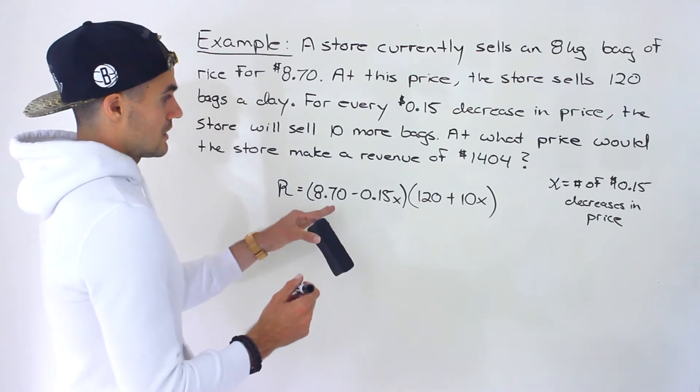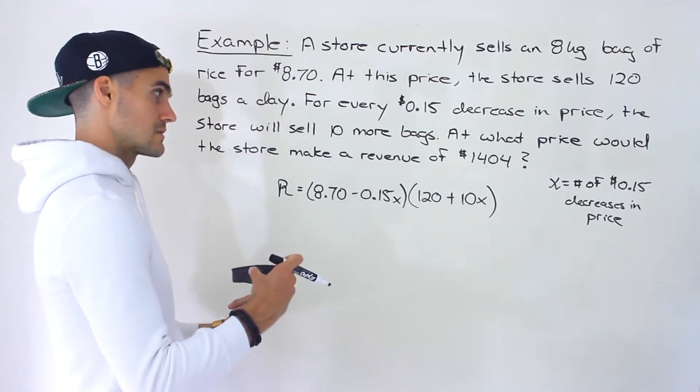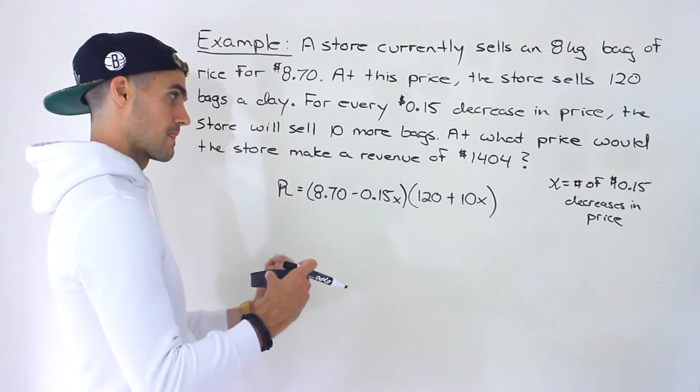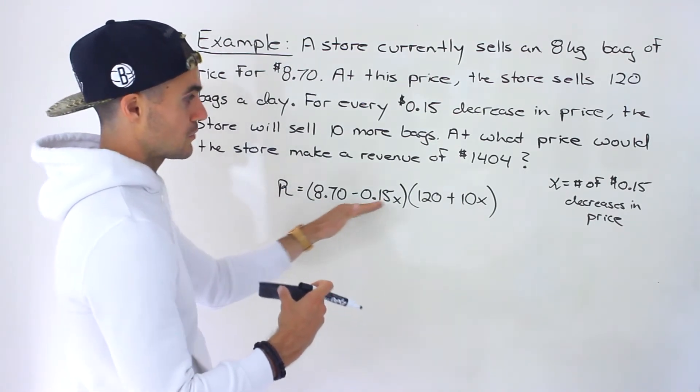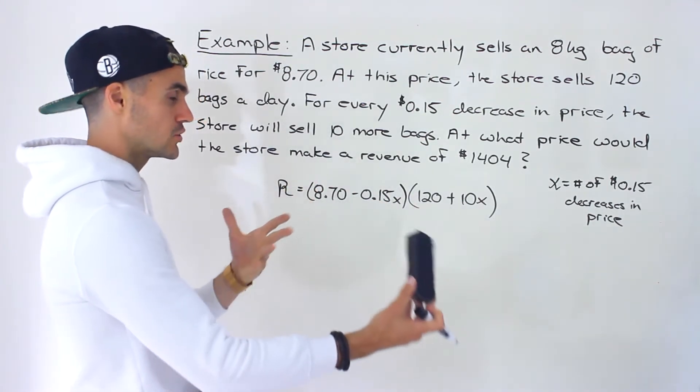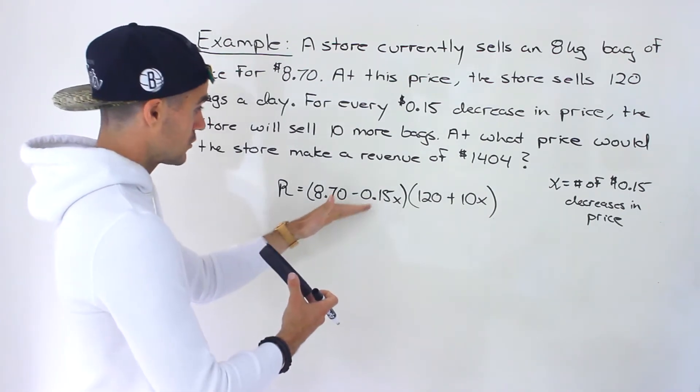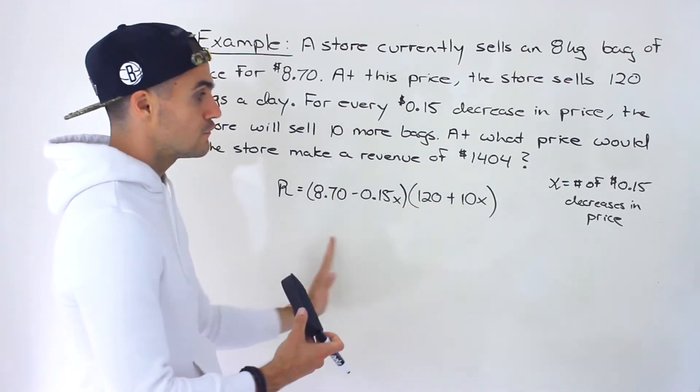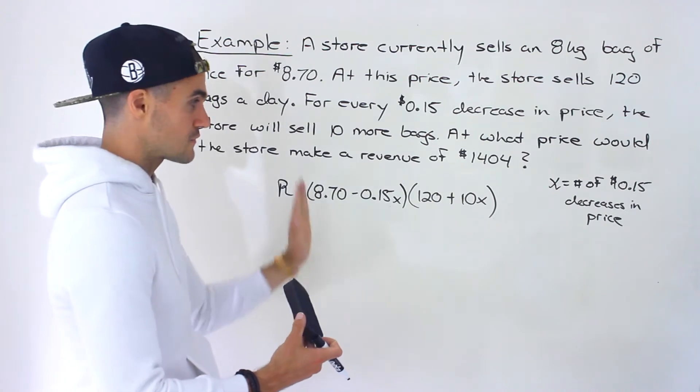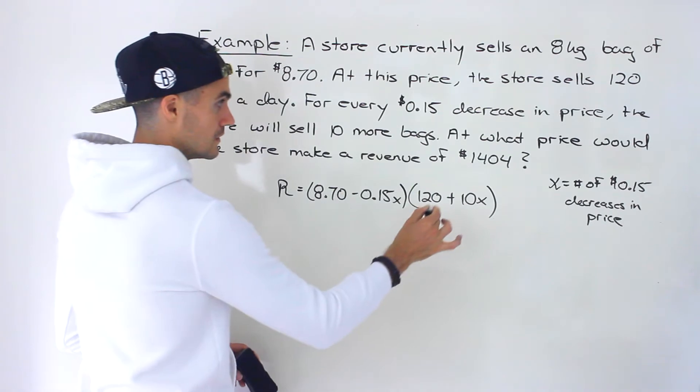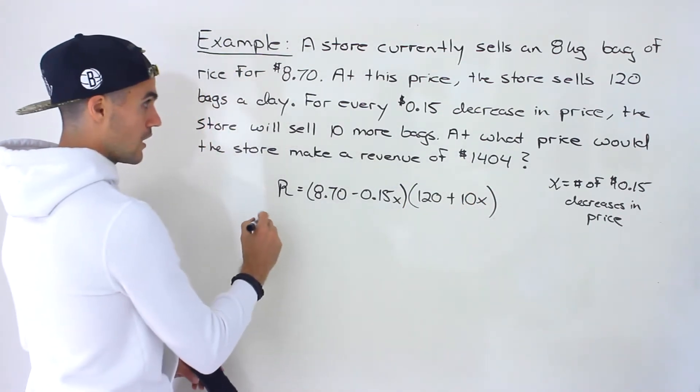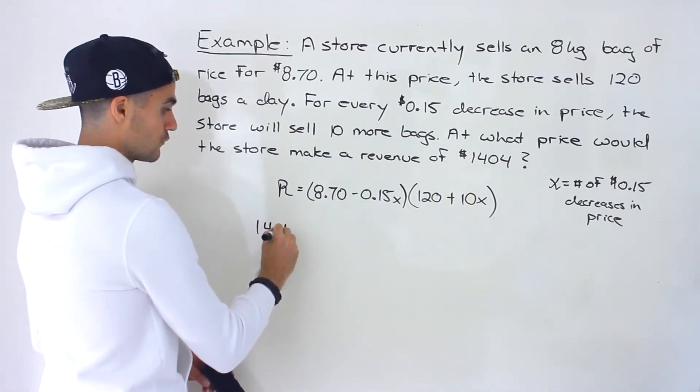Now here, in previous examples, what we were doing a lot of times was finding the maximum revenue. So we would expand this, it'd be a quadratic, then you could complete the square on it, or you could find the intercepts, find the middle between the intercepts, find that max point. But we're not finding a max point. We're finding when are we going to make a revenue of $1,404.